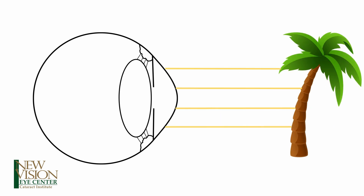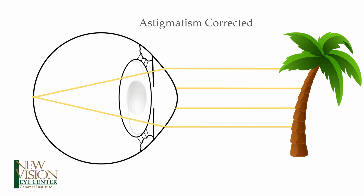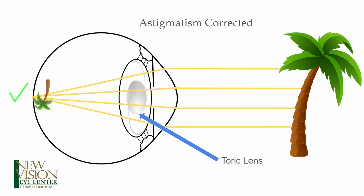Putting it all together, if you want to look at a palm tree outside, light coming into your eye has to focus clearly through the cornea, through the lens, and finally on the retina to produce a nice clear image. If you have astigmatism, this doesn't happen. Because of your oval-shaped cornea, you have two different focal lengths that result in blurring. If you're having cataract surgery, this can be corrected by implanting a toric astigmatism-correcting lens implant, which results in light focusing properly and clear vision.